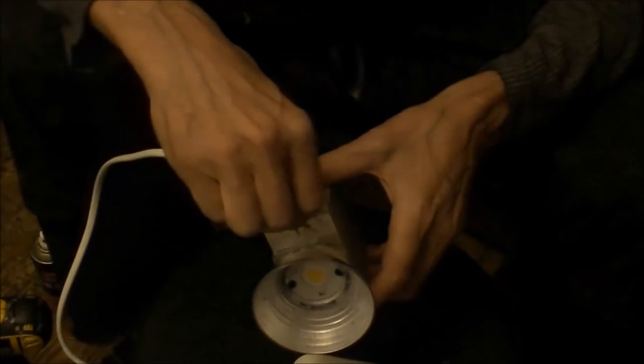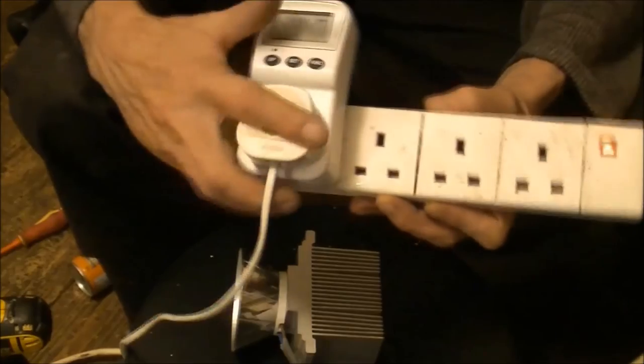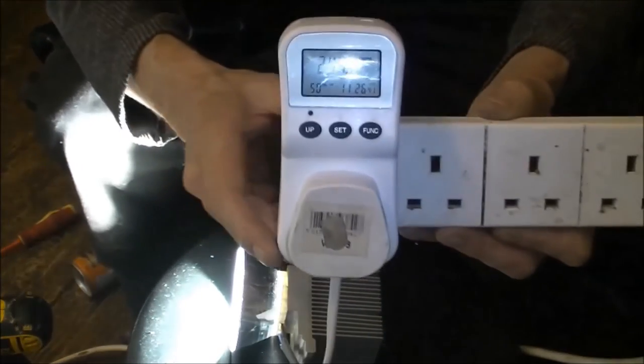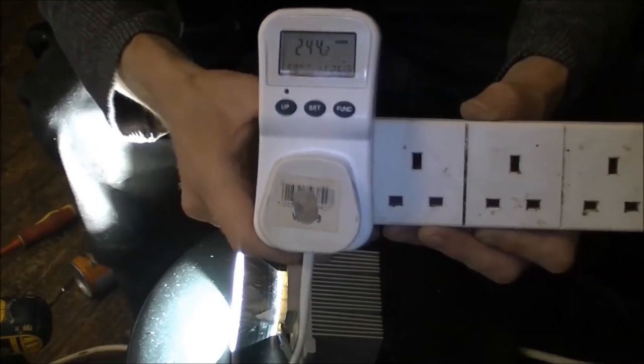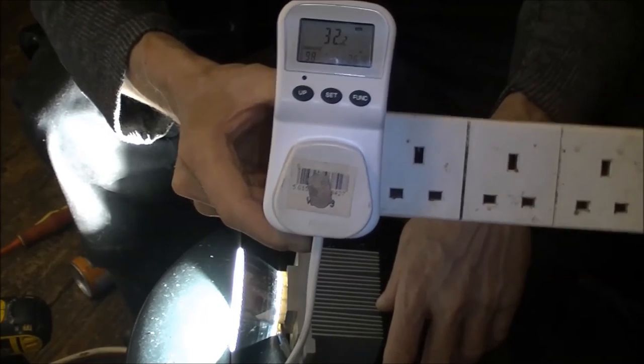There we go. So positive goes to the right, negative goes to the left. If they go in the other way around, nothing happens. And now if we plug this into it, still showing 244 volts, and there's your wattage—32 watts.